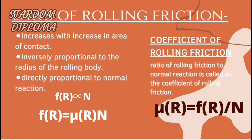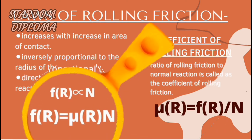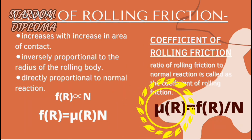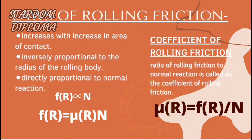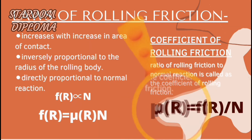As the radius increases, rolling friction decreases. The last law is that rolling friction is directly proportional to the normal reaction. Removing the proportionality symbol, we get μr, the coefficient of rolling friction. So, Fr = μr × N. The coefficient of rolling friction, μr, is defined as the ratio of rolling friction to normal reaction: μr = Fr / N.